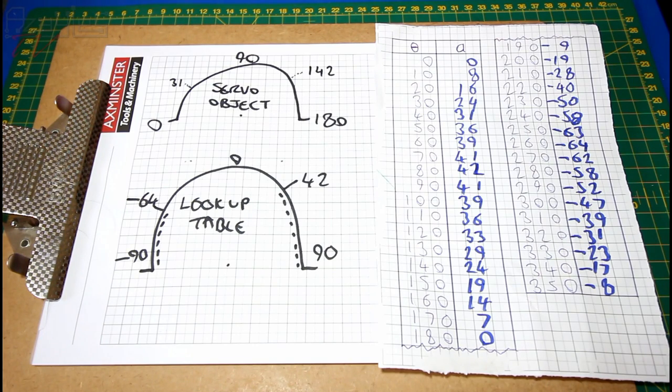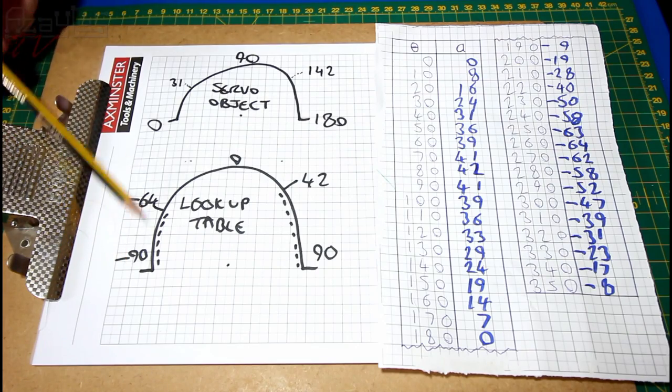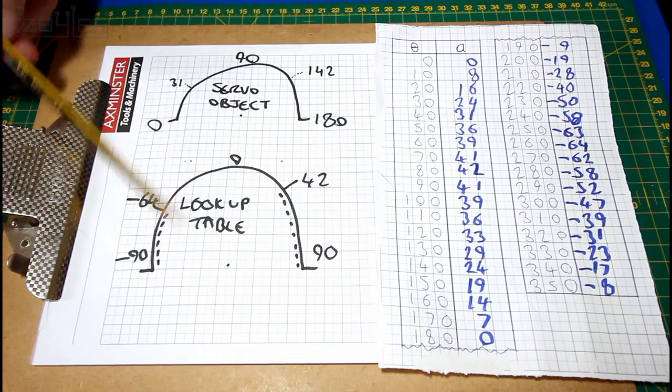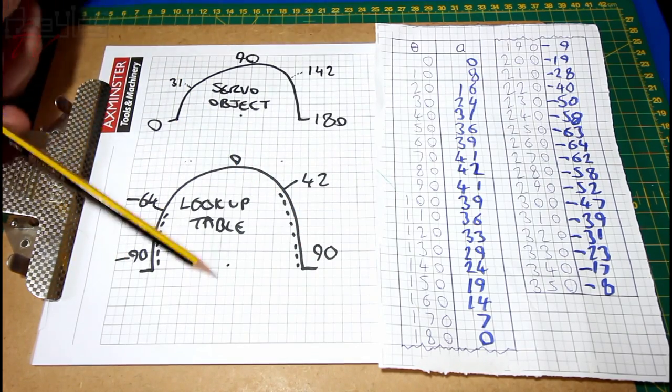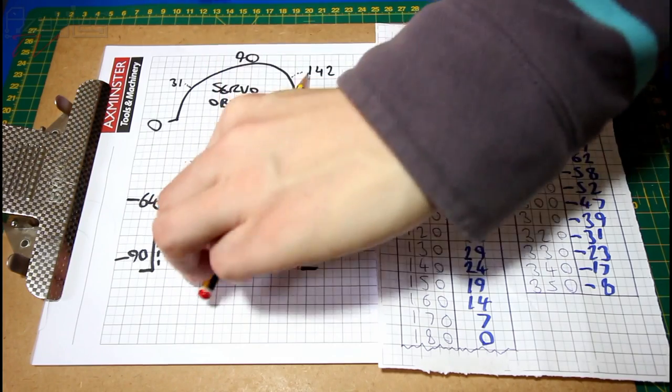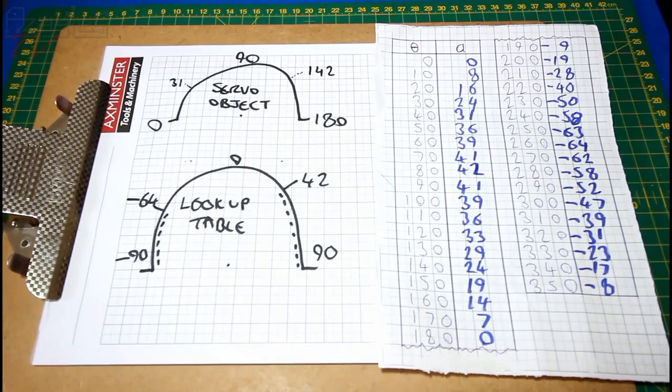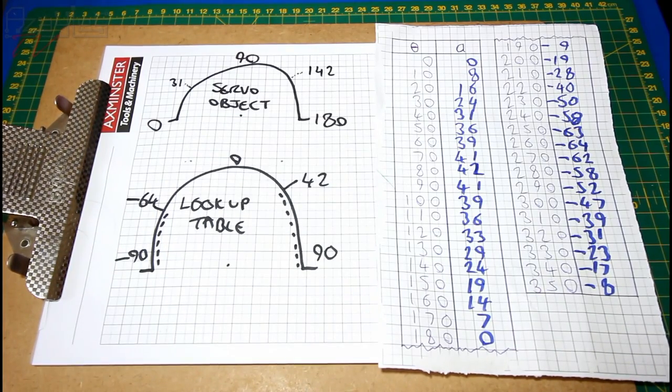Problem number one. My lookup table goes in the range minus 90 on the left here to plus 90, with zero being a central position for the servo, so it will sweep back and forth. However, the servo object in Arduino uses the range zero to 180, so I have to add 90 degrees to each of the values to get the sweep.